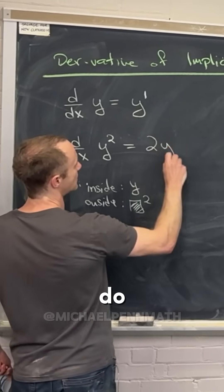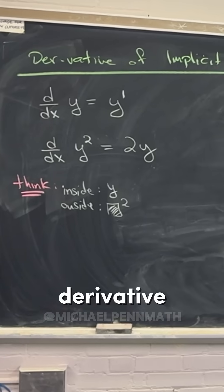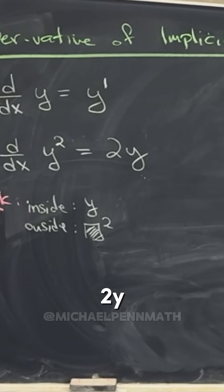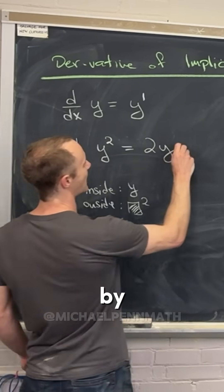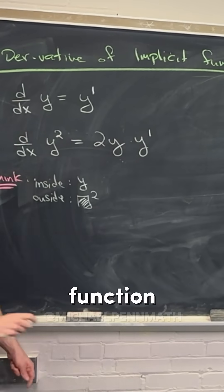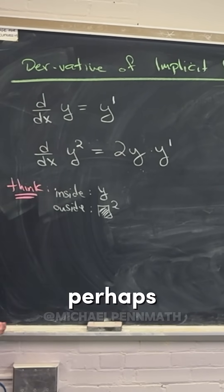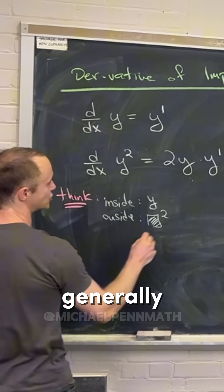We do the basic shape of the derivative of the outside function, so that would be two times y. And then we multiply by the derivative of the inside function, so that would be y prime. And then perhaps we could even say this more generally.